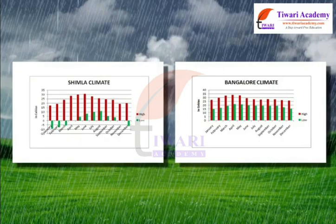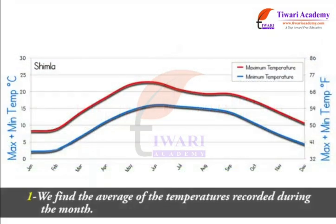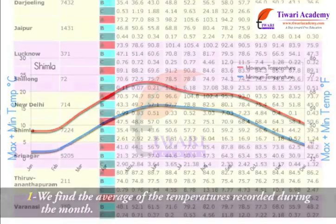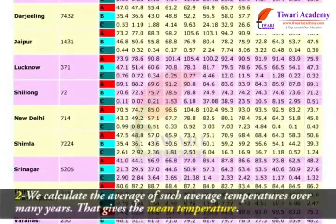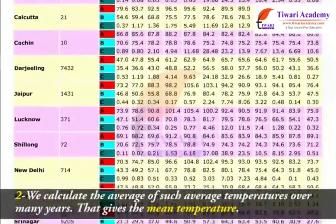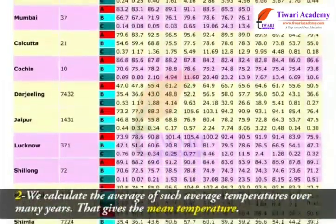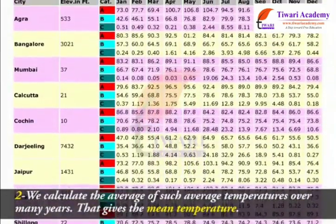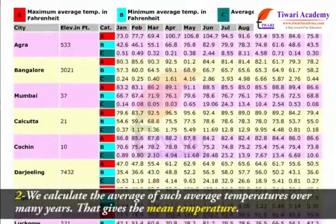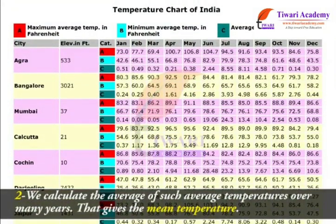The mean temperature for a given month is found in two steps. First, we find the average of the temperatures recorded during the month. Second, we calculate the average of such average temperatures over many years. That gives the mean temperature.